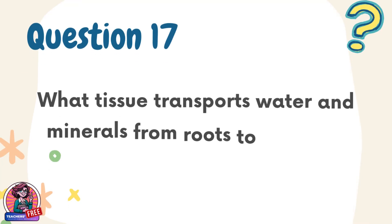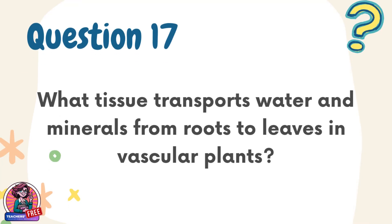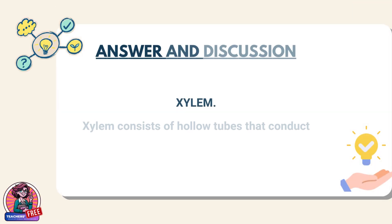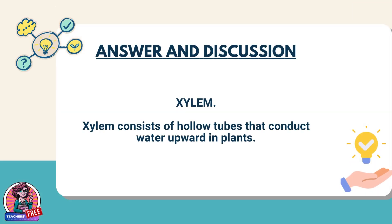Question 17. What tissue transports water and minerals from roots to leaves in vascular plants? Answer: Xylem. Xylem consists of hollow tubes that conduct water upward in plants.